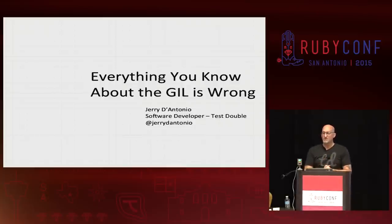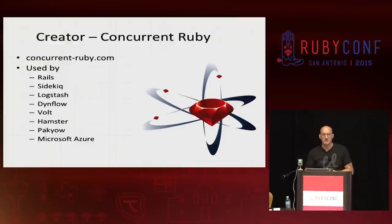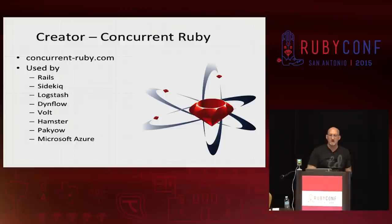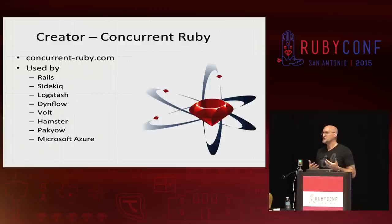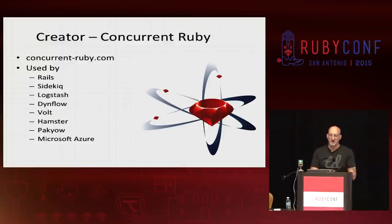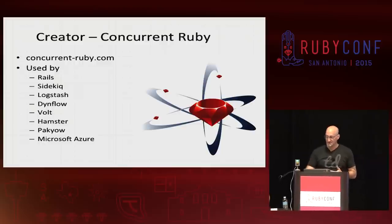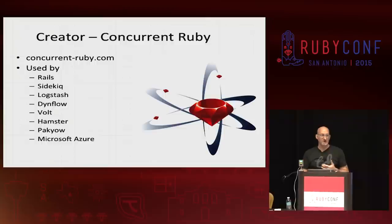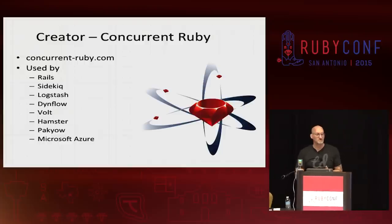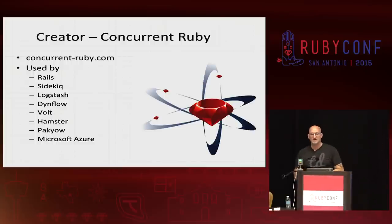The probably most relevant thing about me with respect to this particular conversation is I created this gem called ConcurrentRuby. ConcurrentRuby is a Ruby gem intended to provide a suite of concurrency tools for Ruby to extend our options for building concurrent applications. ConcurrentRuby is being used by a number of projects you may have heard of: Rails, Sidekiq, Logstash, Dyneflow, Volt, Hamster, Paquiao, Microsoft Azure — who uses it in their cloud. It's really humbling to see these projects on the list saying that they're using our work.